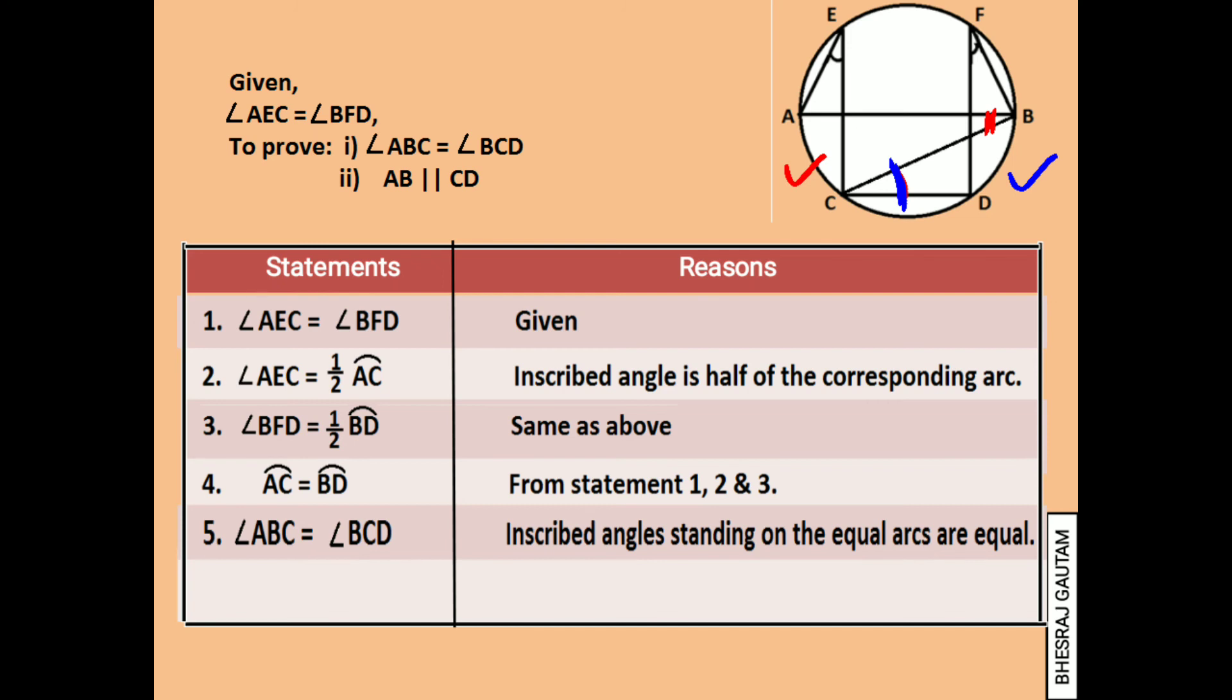Here we prove the first condition. Finally, we can also conclude that AB is parallel to CD, since these two sides form equal angles ABC and BCD being alternate angles.